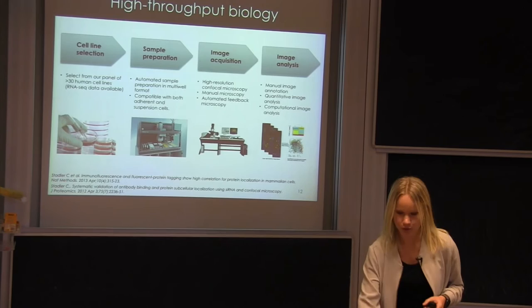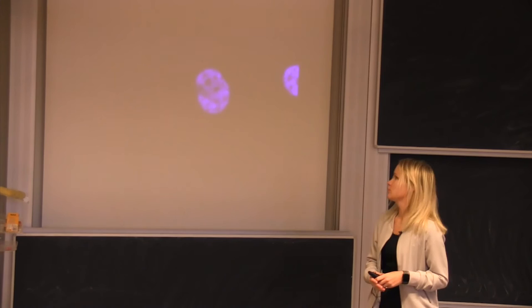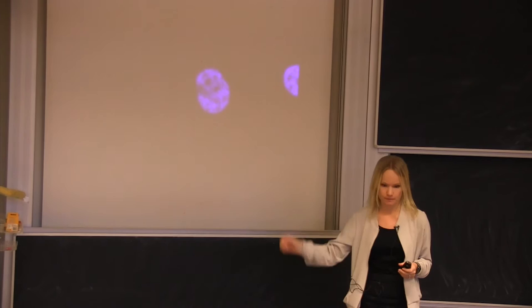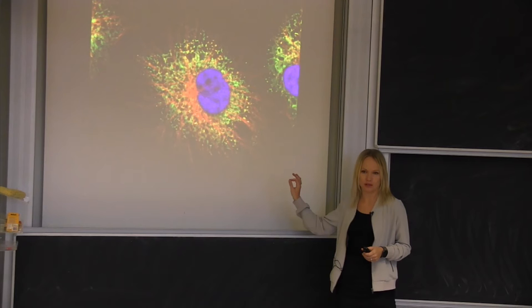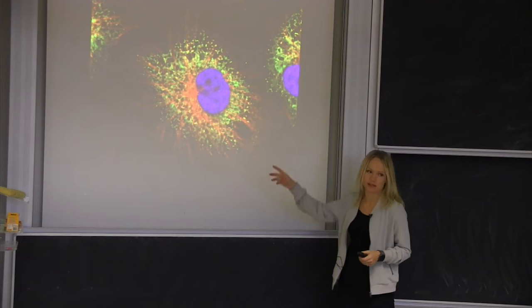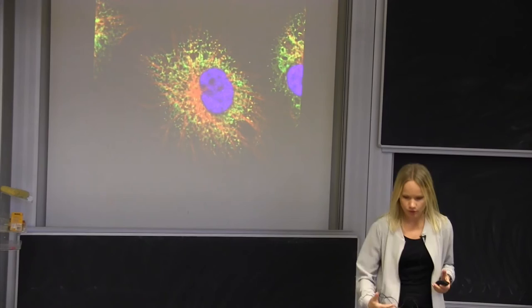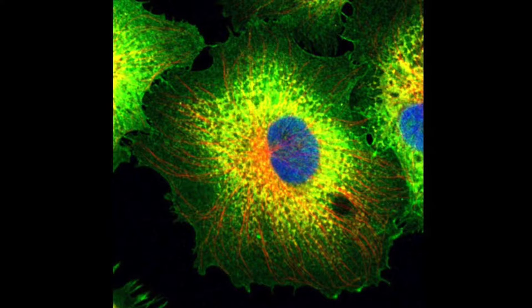The images look like this. We don't only look at the protein of interest, we also use some markers. We use a marker for the nucleus and we use a marker for microtubules and we use a marker for the endoplasmic reticulum. This is very good that we have a standardized set of markers in all images for when you want to do computational image analysis. You can use these for cell segmentation and you can look how the other patterns relate to these patterns.